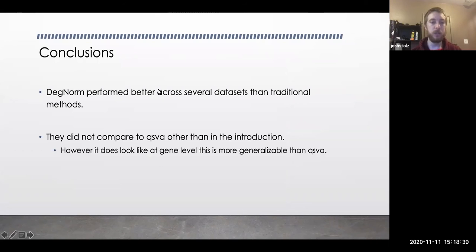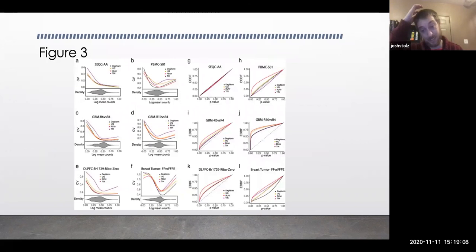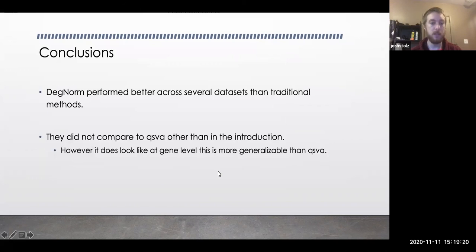So some of the conclusions we can draw here are DegNorm does prove to provide a better means of residualizing out degradation data. They didn't provide the comparison to QSVA I was looking at. So I was wondering maybe we should remake this last one, but just with QSVA and DegNorm for a subset to compare. Especially, I would assume we already have it for the DLPFC data, maybe.